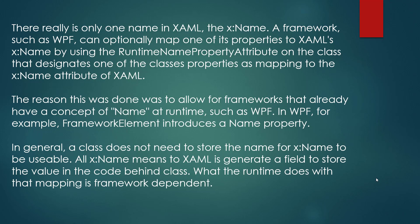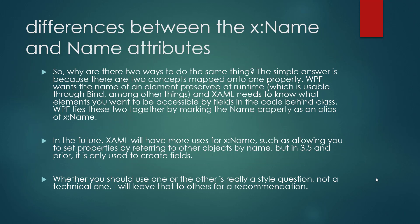In WPF, for example, FrameworkElement introduces a Name property that is mapped by the Window. In general, a class does not need to expose a Name property to be usable. All x:Name means to XAML is that a field is created to store the value in the code-behind class. What the runtime does with the mapping is framework-dependent.